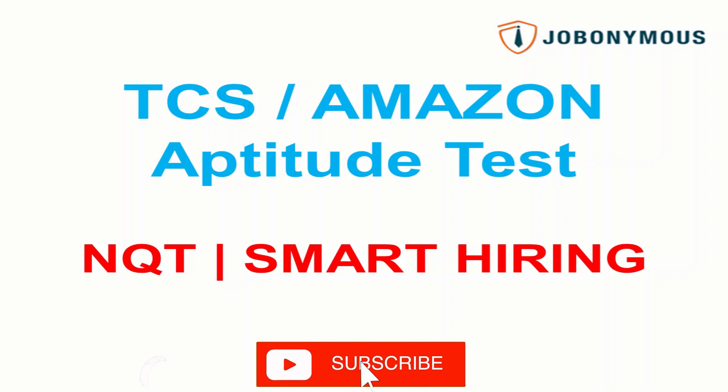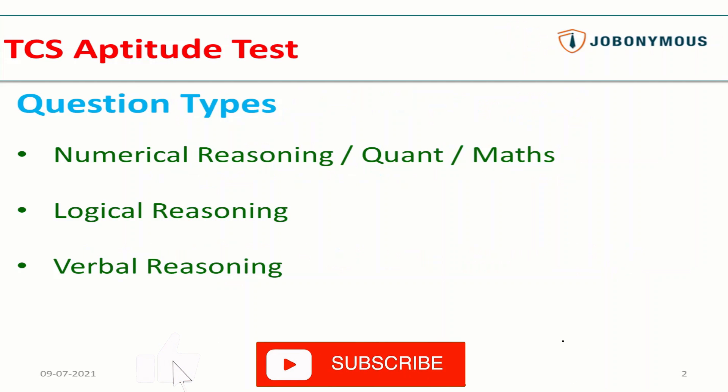But before that, just a request to please like my videos to support my channel. Regarding the aptitude test for TCS, Amazon, or any other company, it consists of three sections: numerical reasoning or quant or maths as one section, logical reasoning as the second, and verbal reasoning as the third. Today I'm covering tricky questions in the numerical reasoning part.